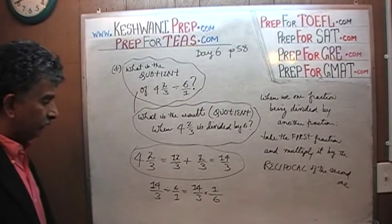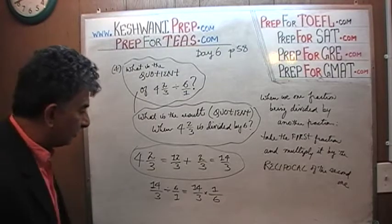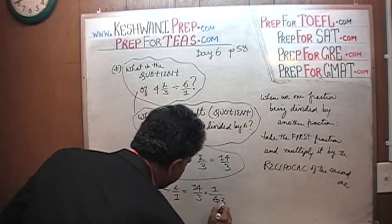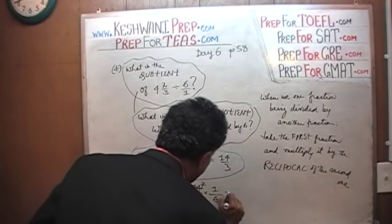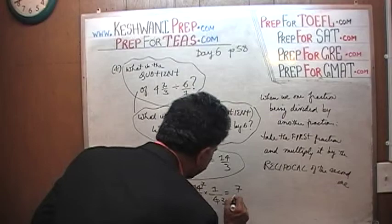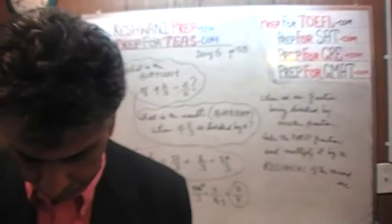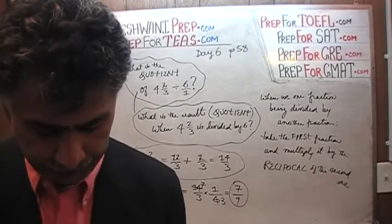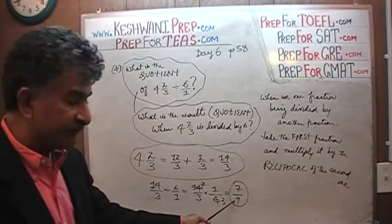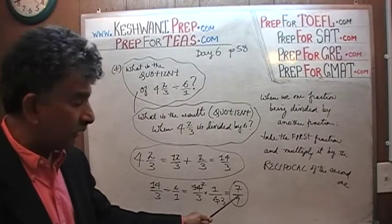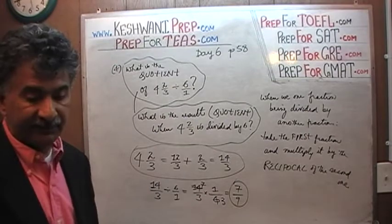We have fourteen-thirds times one-sixth. Six and fourteen are both even, so divide top and bottom by two: six becomes three and fourteen becomes seven. We get seven times one on top, which is seven, and three times three on the bottom, which is nine. Our final answer is seven-ninths. Since seven is less than nine, the numerator is smaller than the denominator — this is a proper fraction, so we cannot write it as a mixed fraction.